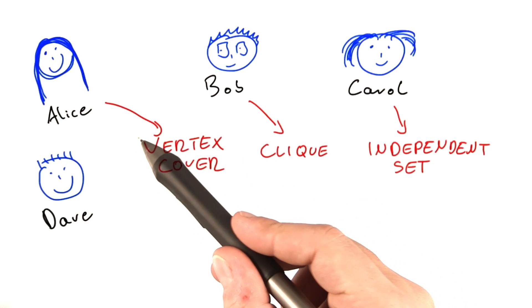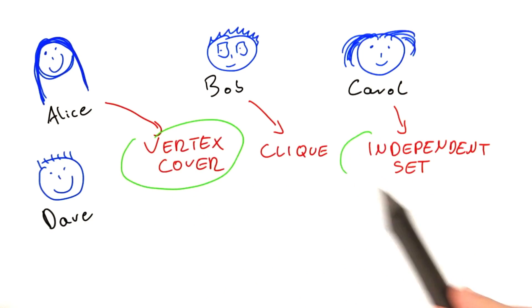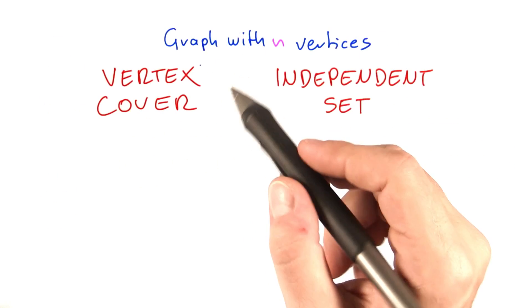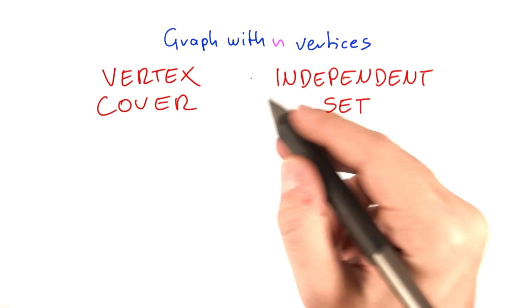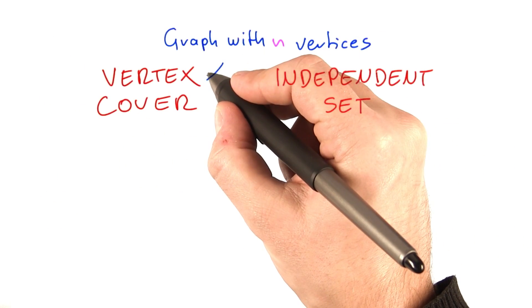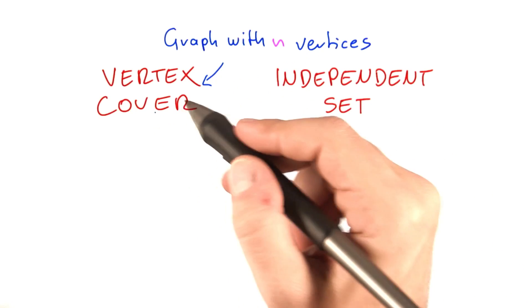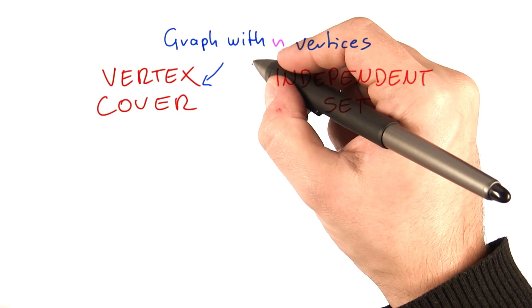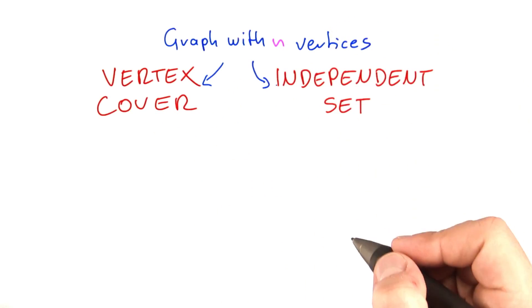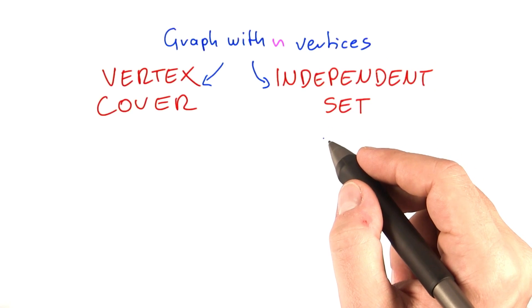Let's investigate this further. For now, we'll focus on vertex cover and independent set. Say we're given a graph with n vertices, and we're looking at the smallest possible vertex cover, a minimum vertex cover for that graph, and the largest possible independent set, a maximum independent set.